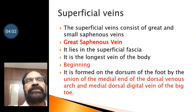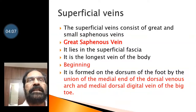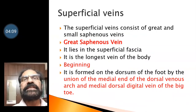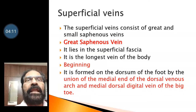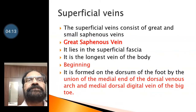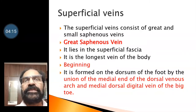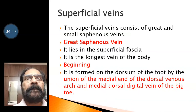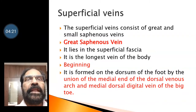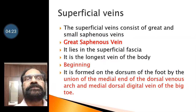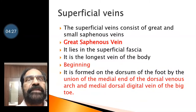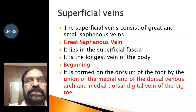First we will start with superficial veins. The superficial veins are the great and small saphenous veins. The great saphenous vein lies in the superficial fascia. It is the longest vein of the body. It begins on the dorsum of the foot by the union of the medial end of the dorsal venous arch and the medial dorsal digital vein of the big toe.